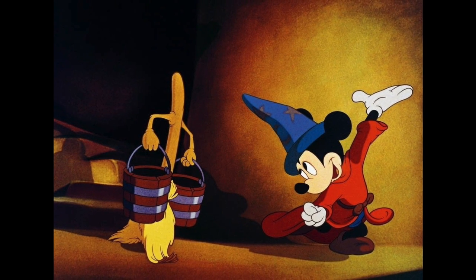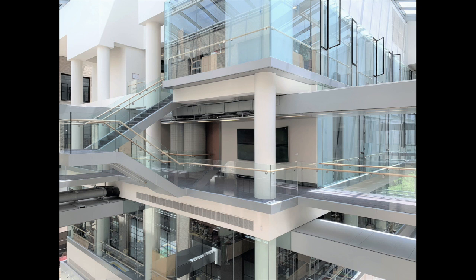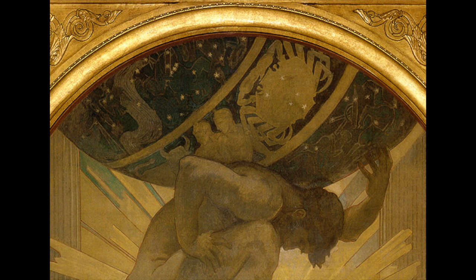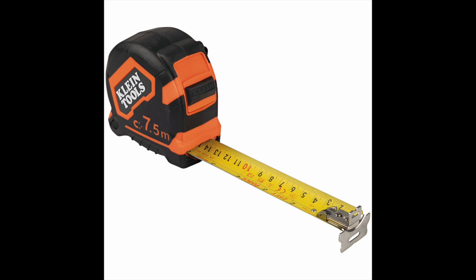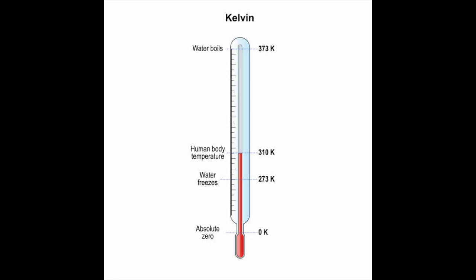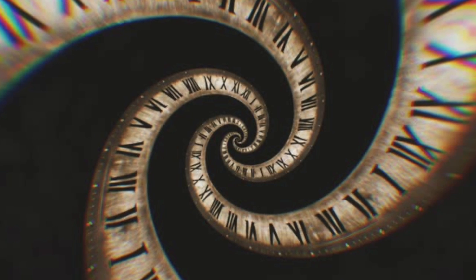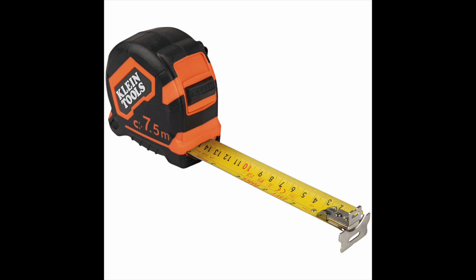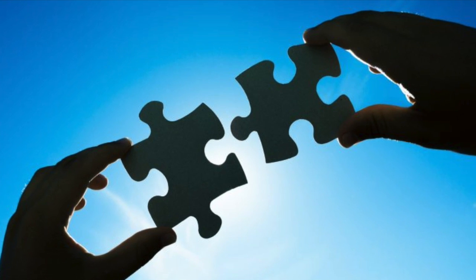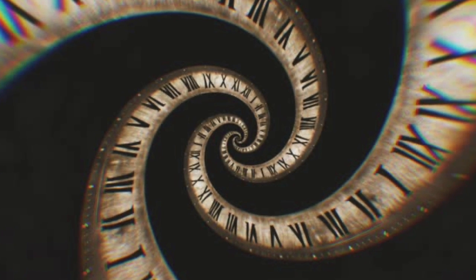The entire edifice of physics and our whole understanding of the universe is built upon four fundamental units: meters, seconds, kilograms, and degrees Kelvin. All other units of measurement are composed of these fundamental ones. Einstein realized that time and space, and therefore meters and seconds, are not independent units. They are instead two aspects of the same thing.